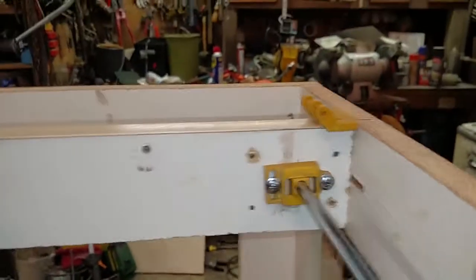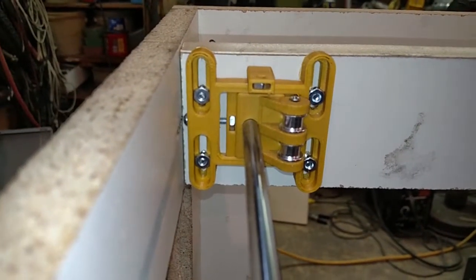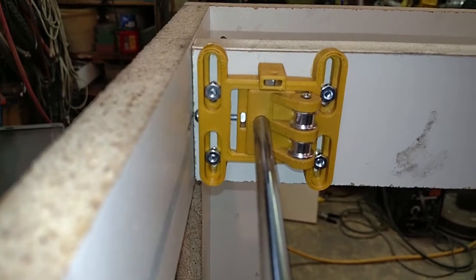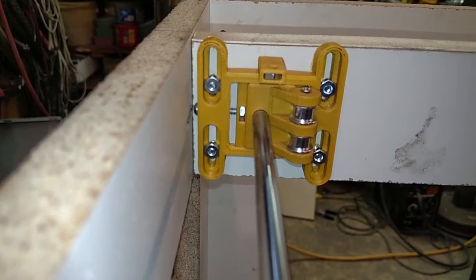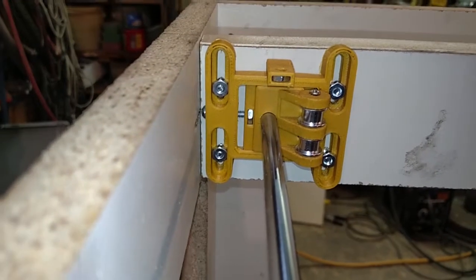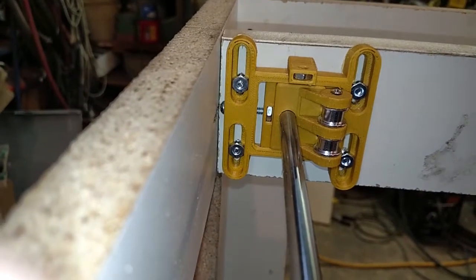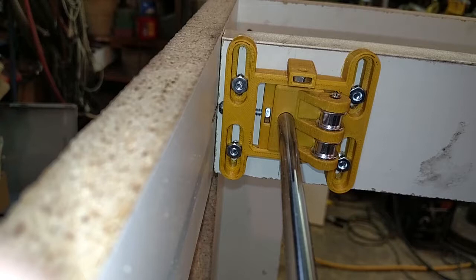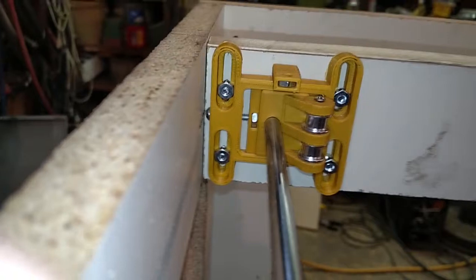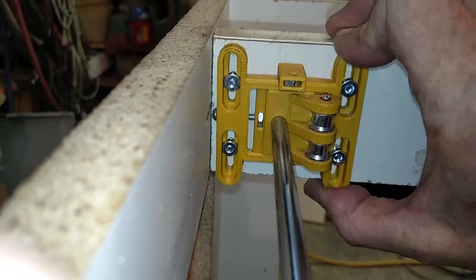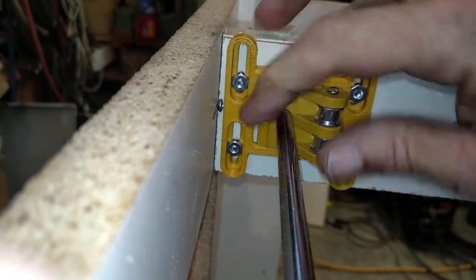The end result is this. Now this is much larger as a whole than the original squaring bracket, but it gives a much larger degree of adjustment. Now if it's installed fairly square to start with, you really don't need a lot of adjustment. But this does allow a significant amount of up and down as well as left and right.